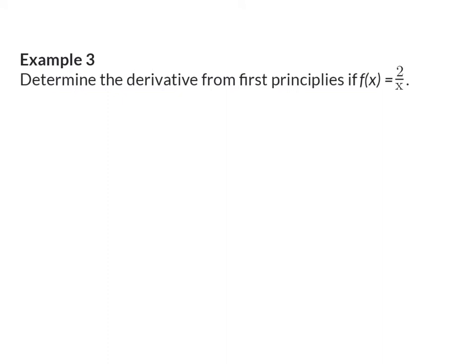Example 3: determine the derivative from first principles if f(x) is equal to 2 over x. Again we are going to use our formula and I'm going to start off calculating the numerator. For f of x plus h, I'm going to have 2 divided by x plus h, minus the original function which is simply 2 over x. Next we are going to add up fractions by getting a common denominator, which will consist of the x of the second fraction and the x plus h of the first fraction.